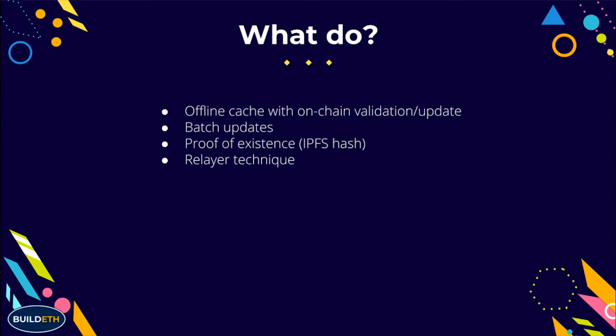Second is batch updates. Going back to the ad example: imagine there are a lot of clicks coming through — we don't want to hit the chain for every single one. If we take maybe 100 of these and put them into an array or data structure and push that at once, we offload a lot of work off the Ethereum network onto our servers. Another technique is proof of existence, currently implemented mostly as an IPFS hash — instead of storing a JSON object on-chain, you store the hash to an IPFS address. What you lose is that other contracts can't get this data on-chain, so you have to consider whether other contracts want this data. For something like 0x orders, other contracts want to leverage that, so some data stays on-chain.